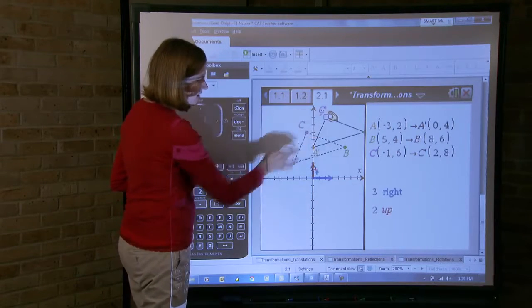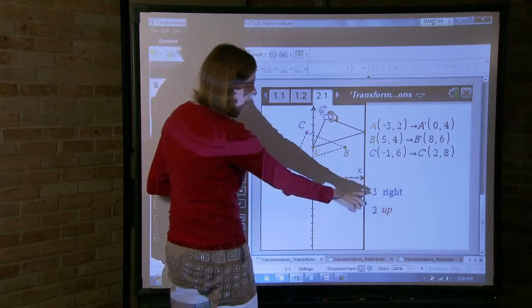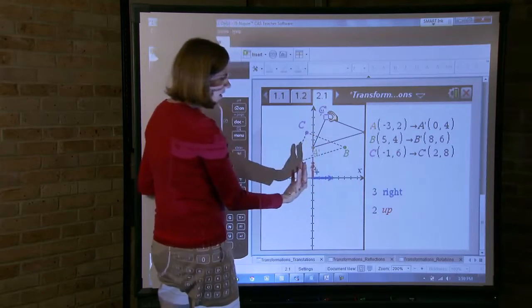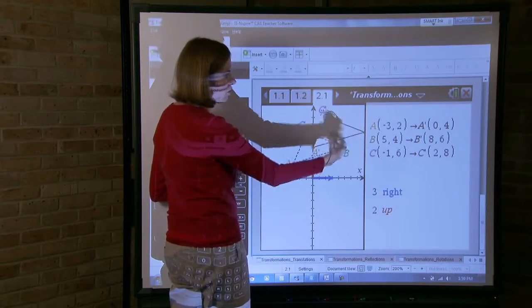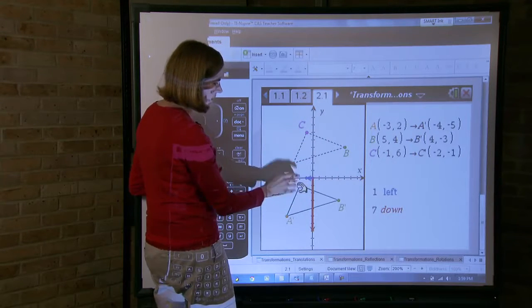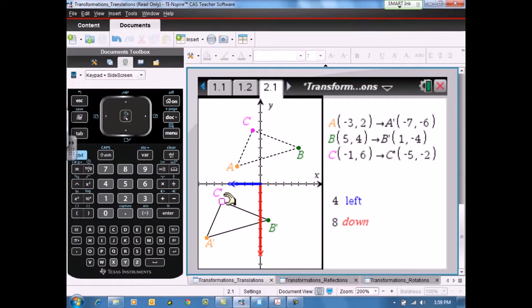There are all sorts of good questions that you can ask. If I want this triangle to be five to the right and two down, then what ordered pair needs to be where? So there are lots of questions that students can begin to think about here.